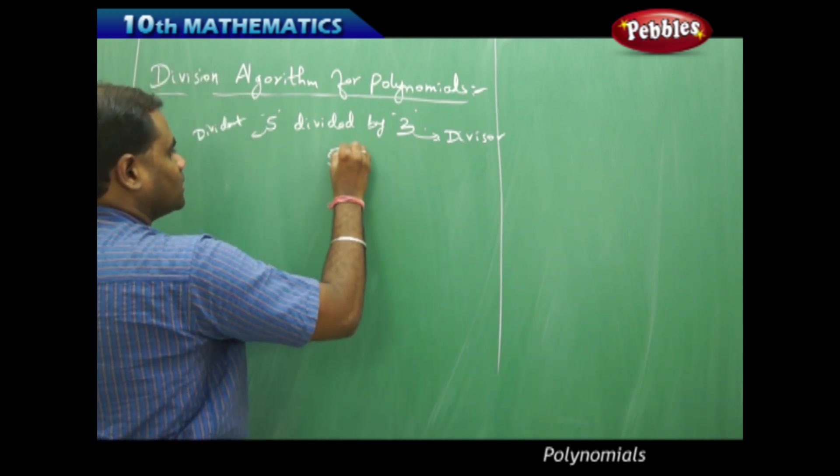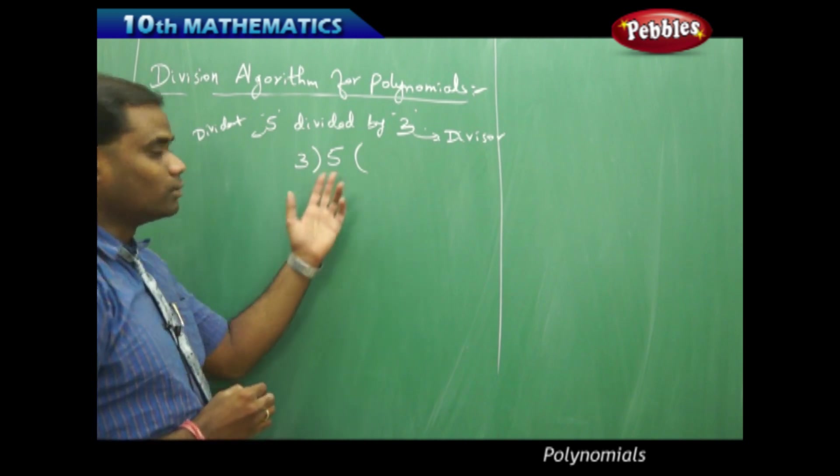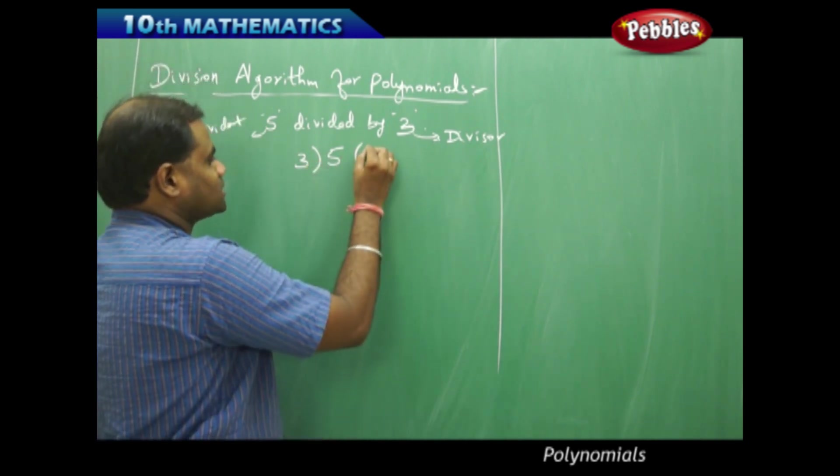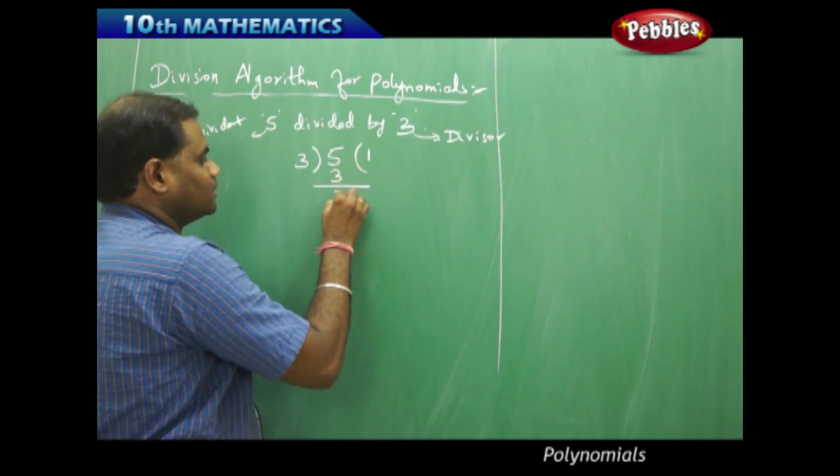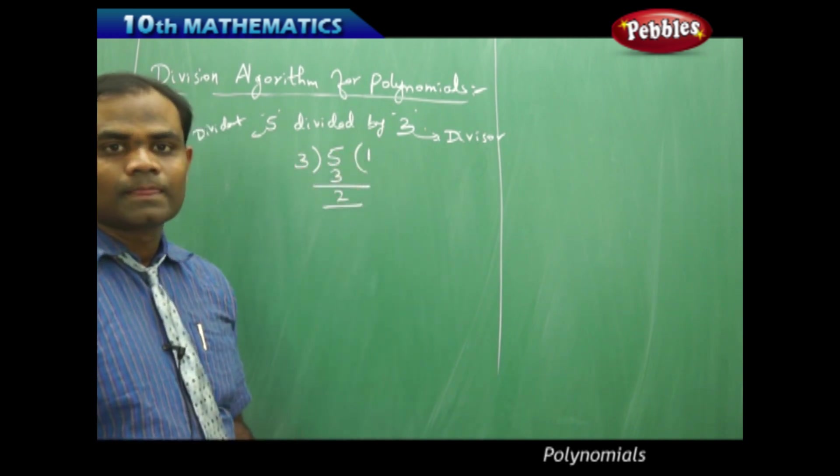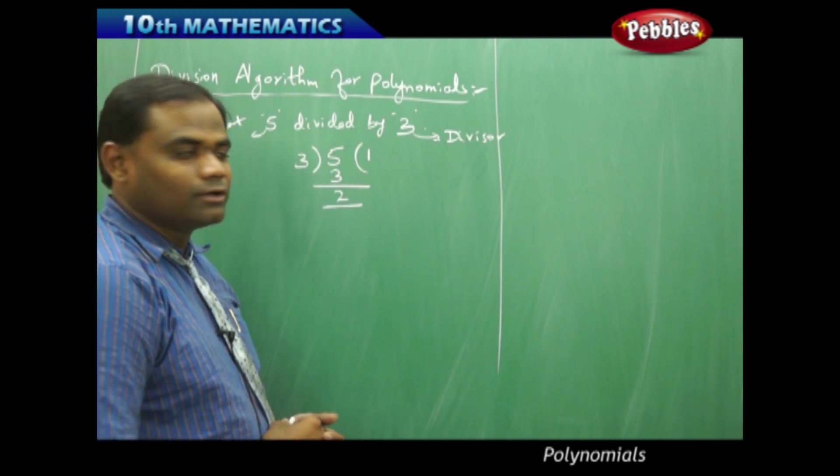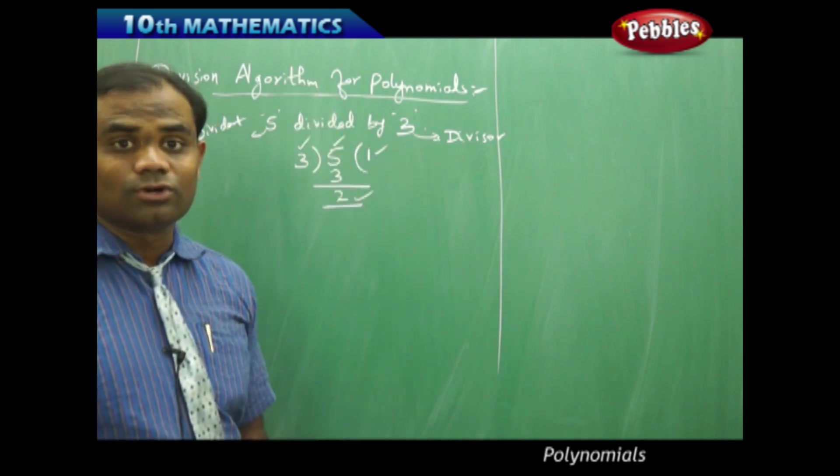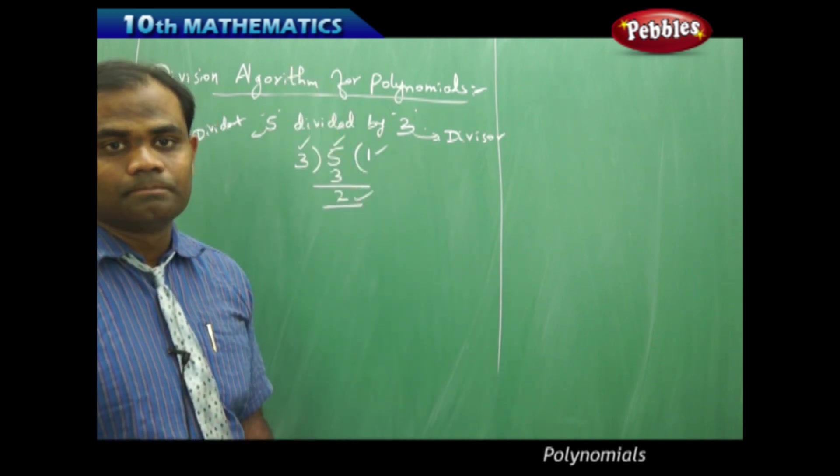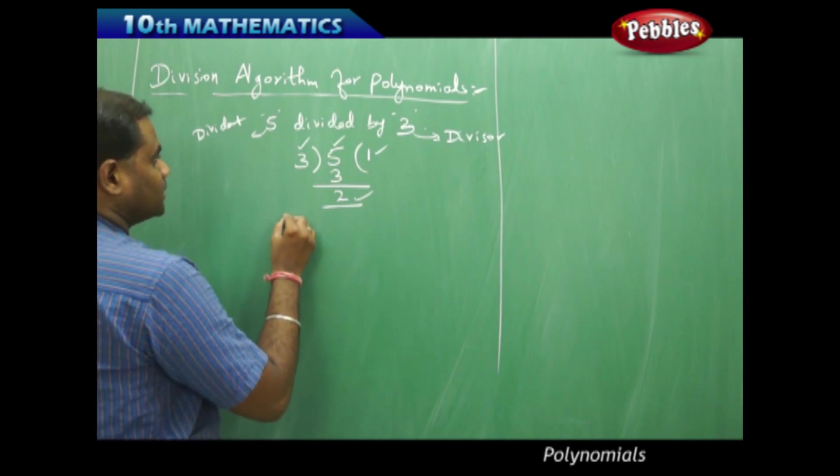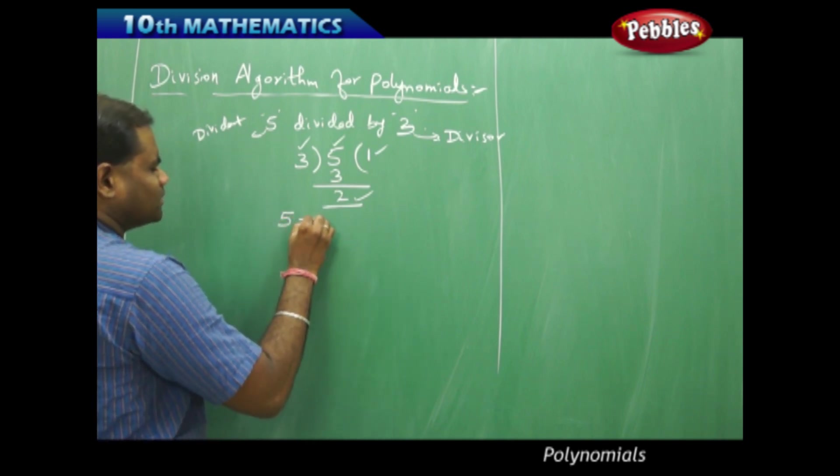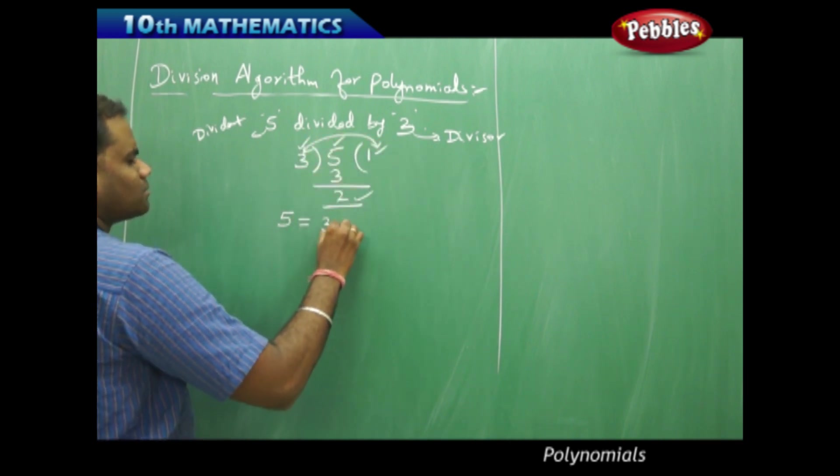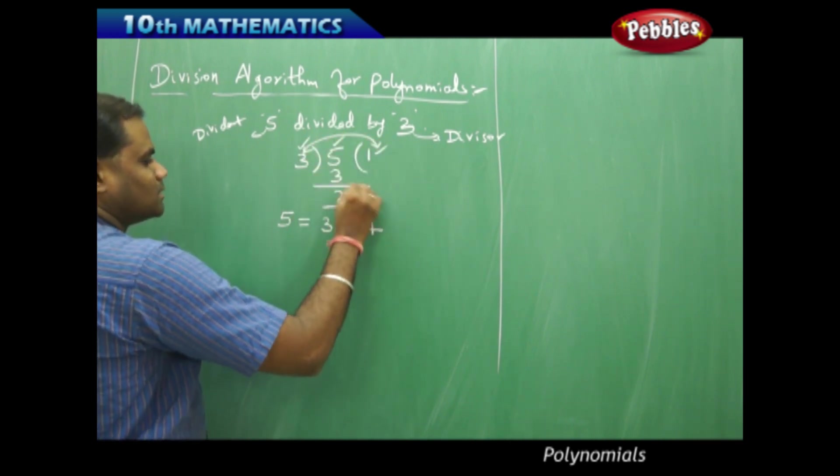When I divide the number 5 with 3, we generally do it with the division method as we all know, taking 3 goes into 1 time, giving 3, then the remainder is 2. We have a very good relation connecting 5, 1, 2, and 3 which is called the division algorithm. The number 5 which is the dividend is obtained by multiplying this with this: 3 times 1 plus 2.